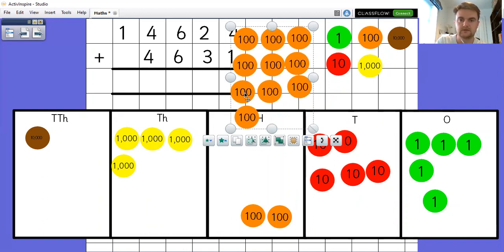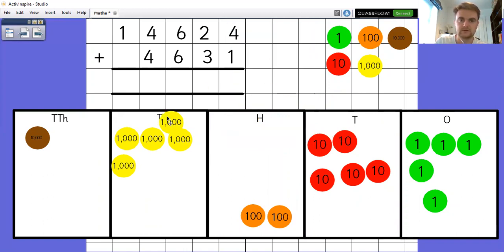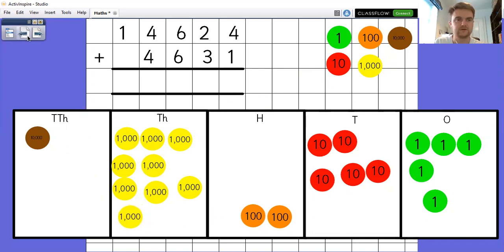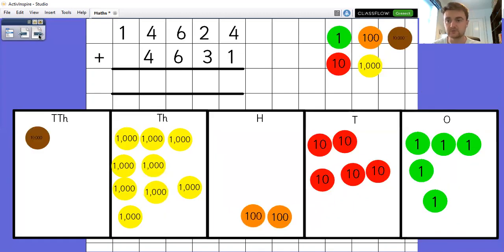I've got four more 1,000s to add. 1, 2, 3, 4, 4. And I don't need to add any extra 10,000s. So my answer ends up with 1, 10,000, 9,000s, 200s, 5, 10s, and 5, 1s. So I should end up with 19,255. And if I have a look, 19,255. So hopefully that gets you to see the visual representation of what the column method does and how it works.